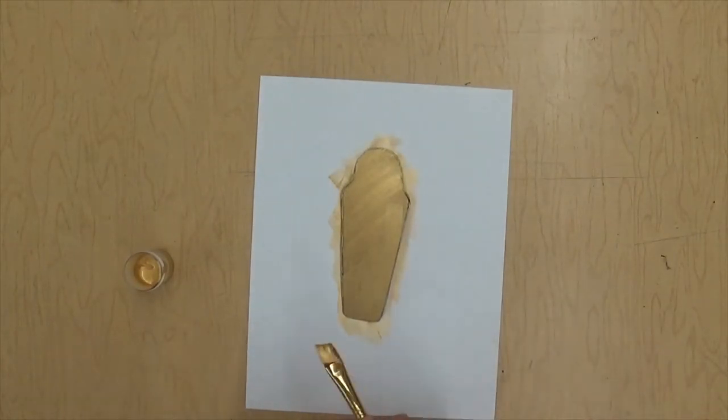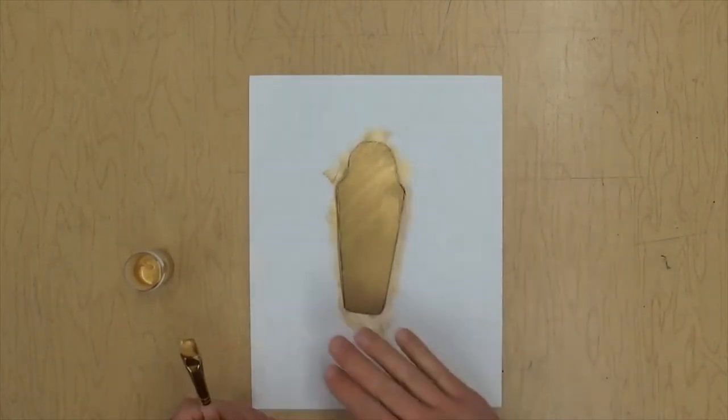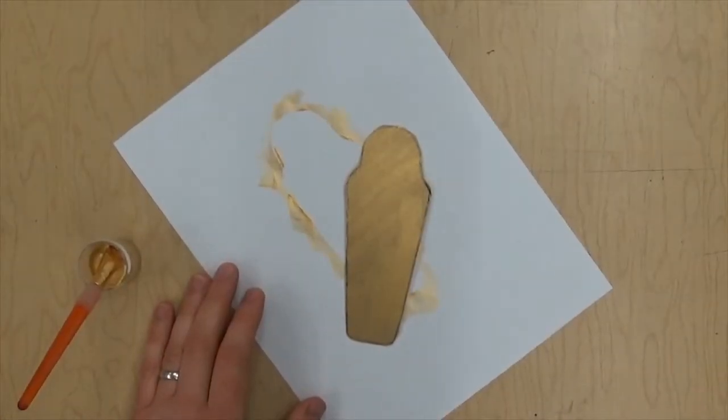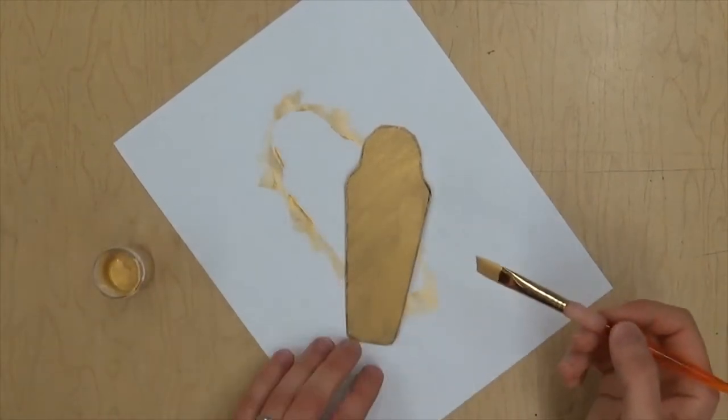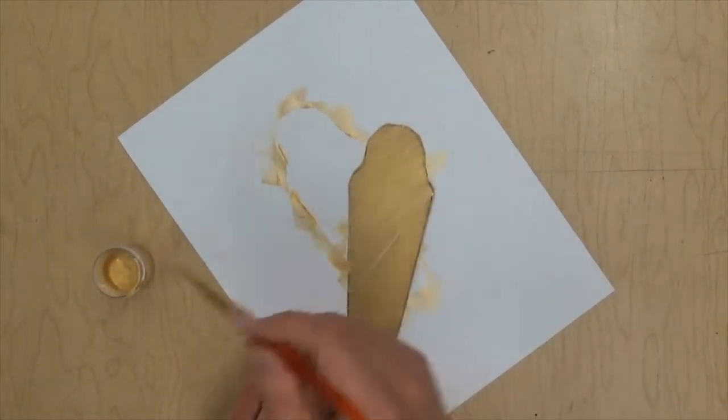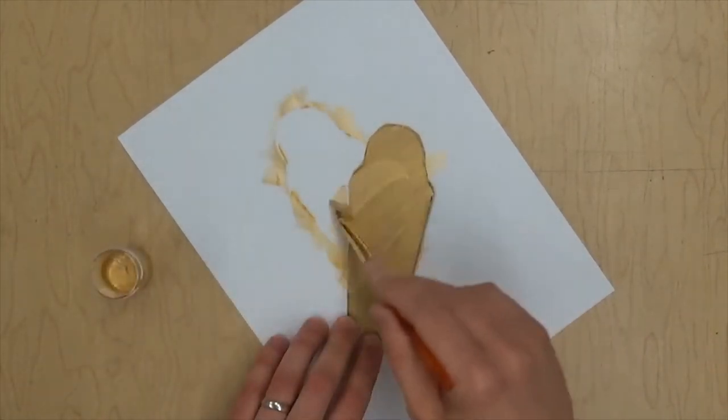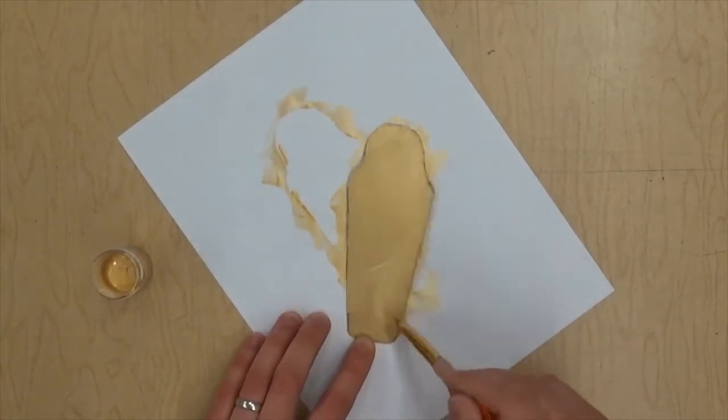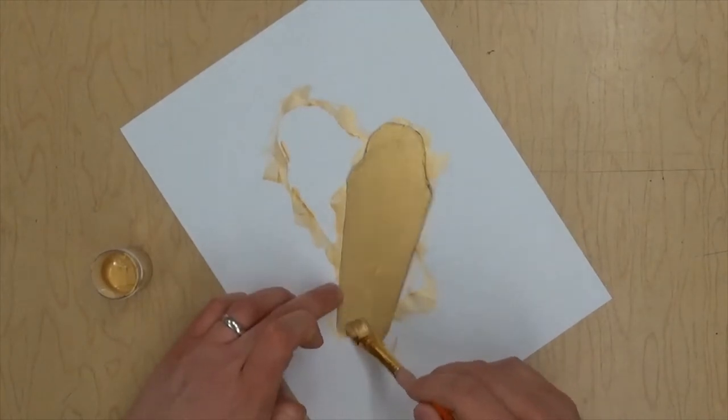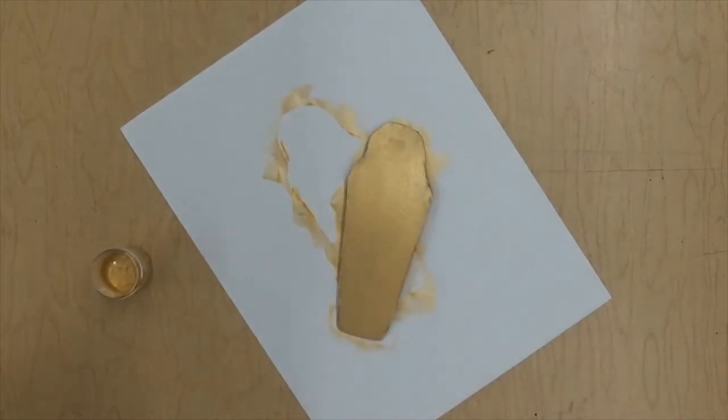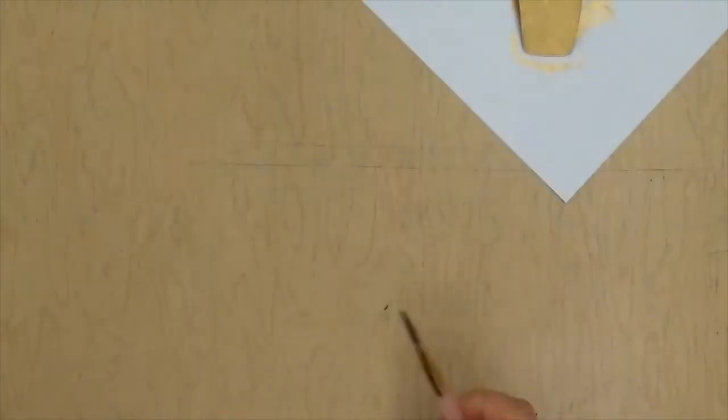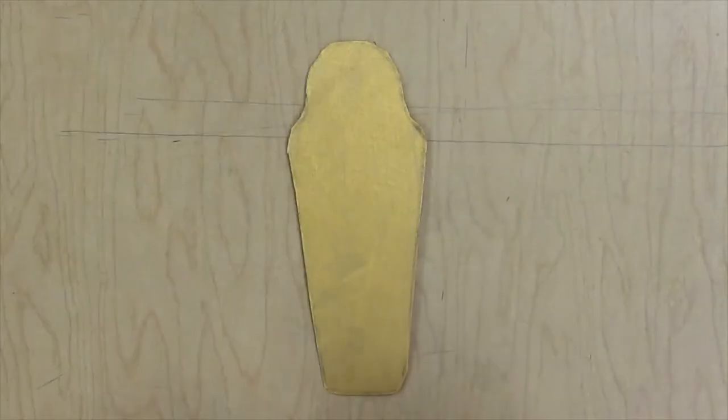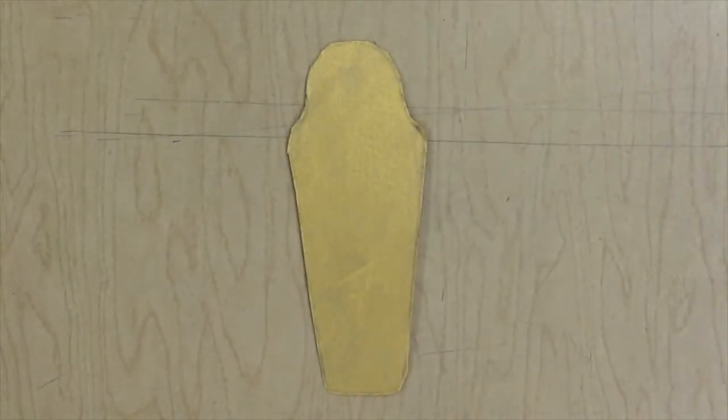I'm going to let that dry. I want extra gold, so when it's dry I'm going to put another coat of gold paint on it. You don't have to do two coats of paint, but I want to. When I'm done, I do have to wash my brush out before the paint dries on it.